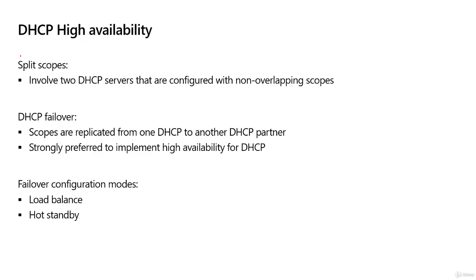Microsoft formalized a solution to achieve what many of us have been doing for decades. The first solution is a split scope. A split scope means you have two DHCP servers configured with non-overlapping scopes — the addresses don't overlap on DHCP server one and server two. This configuration will automatically create the scope on the second server for you. This has actually been around since 2008 R2.